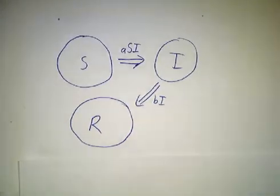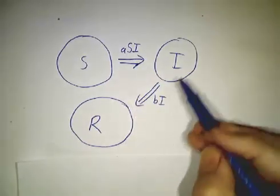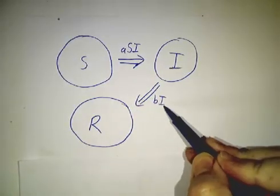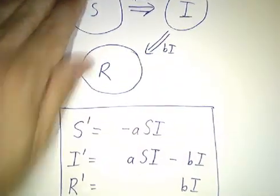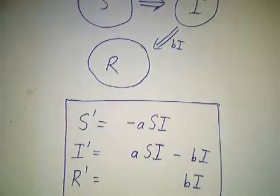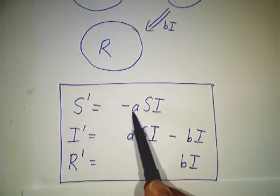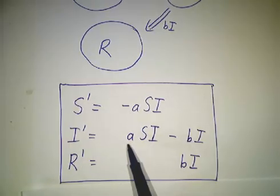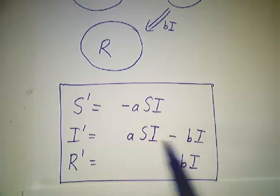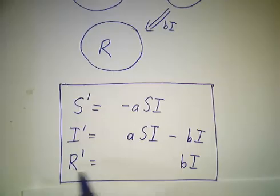So the rate at which we go from S to I is A times S times I. The rate at which we go from I to R is B times I, where A and B are constants. And that means the rate at which S is changing, it's negative because people stop being susceptible. The rate at which I is changing is the rate at which kids are getting sick minus the rate at which they're recovering. And the rate at which R is increasing is the rate at which they're recovering.